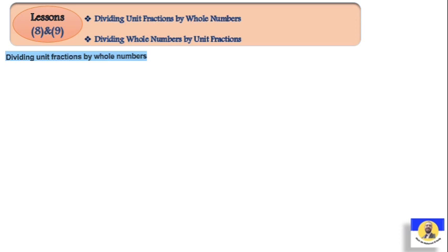In the first part, we start dividing Unit Fractions by Whole Numbers. If we have a fraction, we can divide it by a whole number — that means we want to split the unit fraction into some parts. Think about it: for example, half a pizza, and we want to divide that half pizza between 4 people.